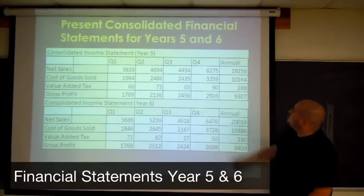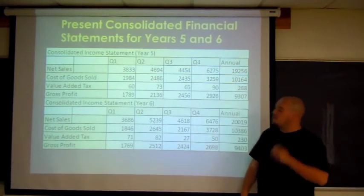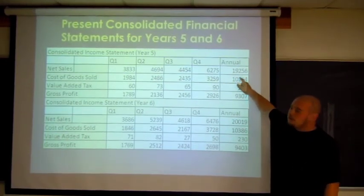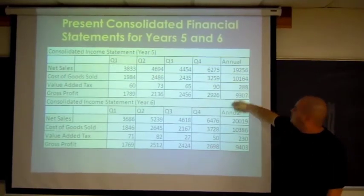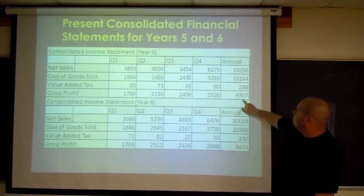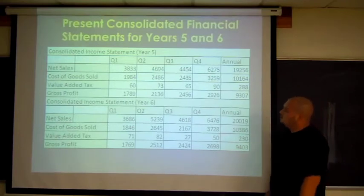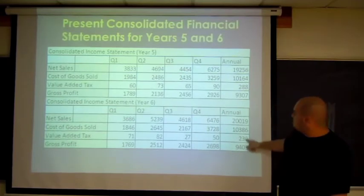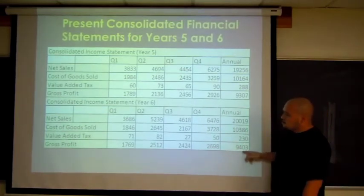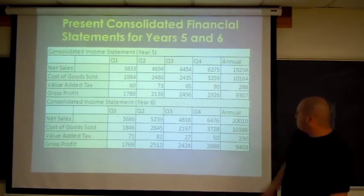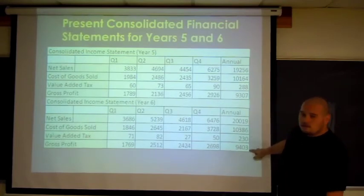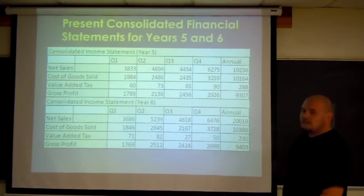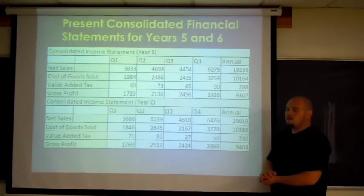My name is Richard, and I'm presenting the financial statements for year 5 and 6. Net sales for year 5, we had 19 million. Cost of goods sold, we had 10 million. Our gross profit for that year was 9 million. Our gross profit for year 6, net sales was 20 million. Cost of goods sold was 10 million. And our gross profit for that year was 9 million. Our gross profit for year 5 and 6 is about the same, so we really increased in our sales.